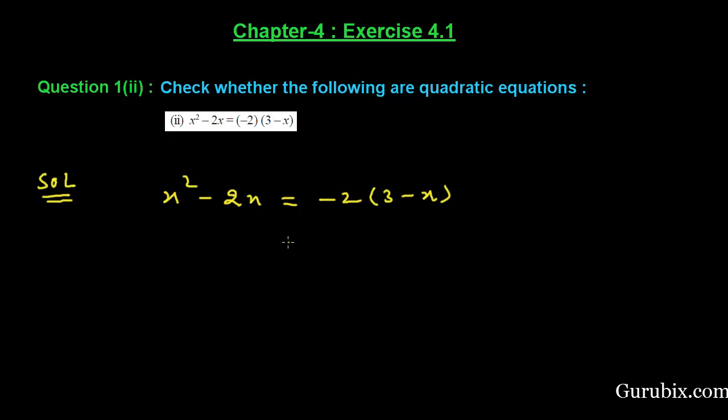First of all, we shall try to write it in its standard form. For that, we shall multiply minus 2 with the values in the bracket. Then we have minus 6 plus 2x. Here we have x square minus 2x.